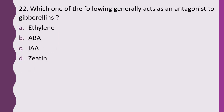Question 22. Which one of the following generally acts as antagonist to gibberellin? Options: ethylene, ABA, IAA, or zeatin. The correct answer is option B, ABA, that is abscisic acid.